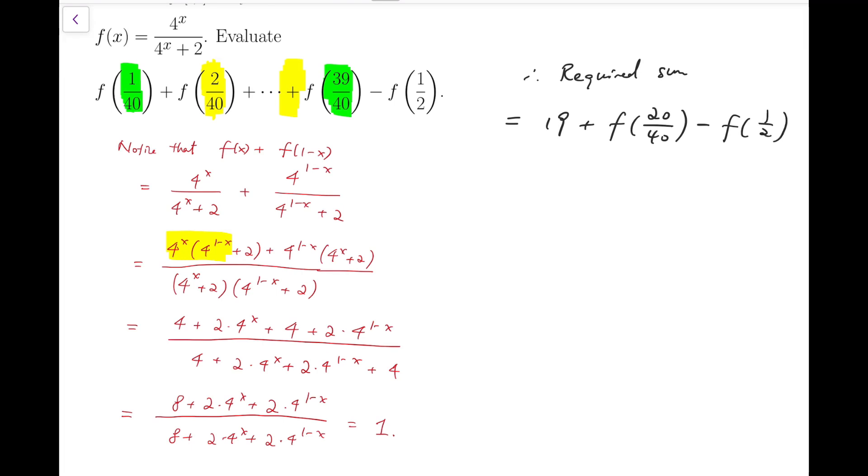So now actually, 20 over 40 is exactly 1 over 2, so these two terms cancel out. So the answer is just 19.